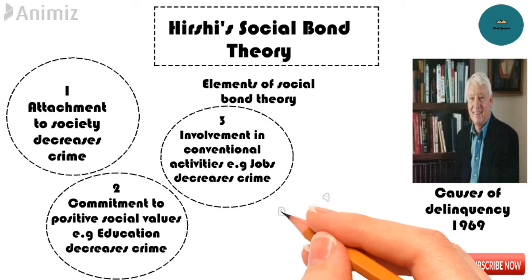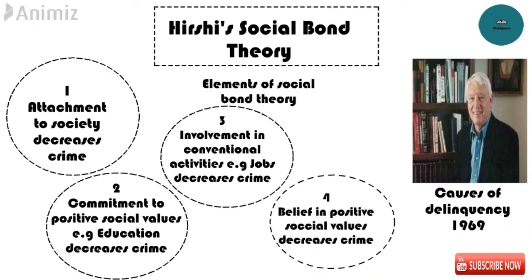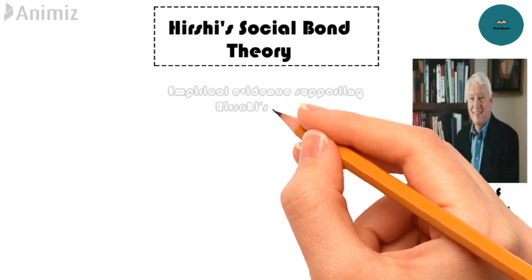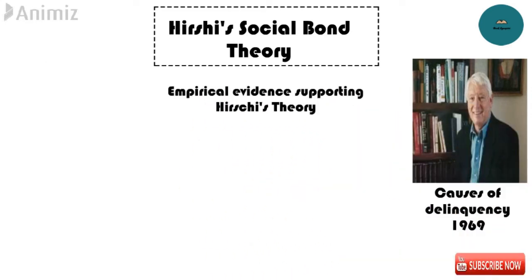The fourth element of Social Bond Theory is belief. People who believe in positive values such as honesty, morality, fairness, patriotism, and responsibility are more optimistic and stay away from deviance and crime. People holding conventional beliefs are less likely to involve in substance abuse. Holding positive beliefs is inversely proportional to crime.